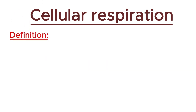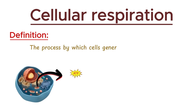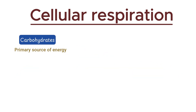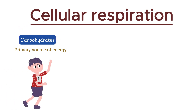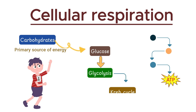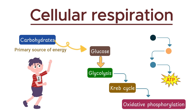Cellular respiration is the process by which cells generate energy by utilizing nutrients from food. The primary source of energy is carbohydrates. When the body needs energy, complex carbohydrates are broken down into glucose. This glucose then goes through a series of reactions, ultimately generating energy. The entire process can be divided into three main stages: glycolysis, the Krebs cycle, and oxidative phosphorylation.